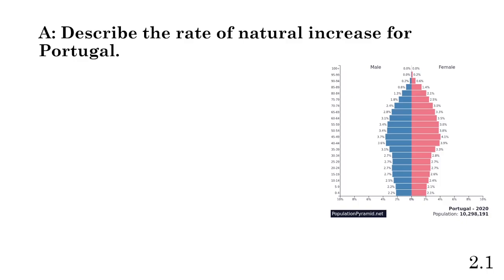The question is: describe the rate of natural increase for Portugal. On the AP exam the FRQ document is in black and white, but it doesn't really need to be in color — I put it in color for visualization. We know males are on the left and females on the right, and we have percentages to compare prevalence. Looking at the general trend, we can see that over the past 40 years or so, the number of people in the age cohorts has declined.